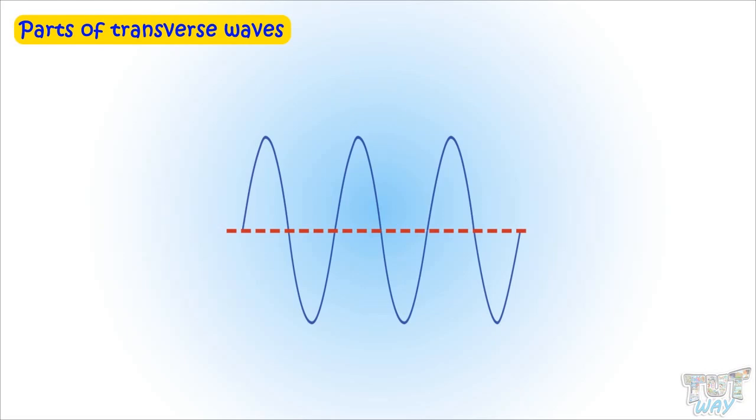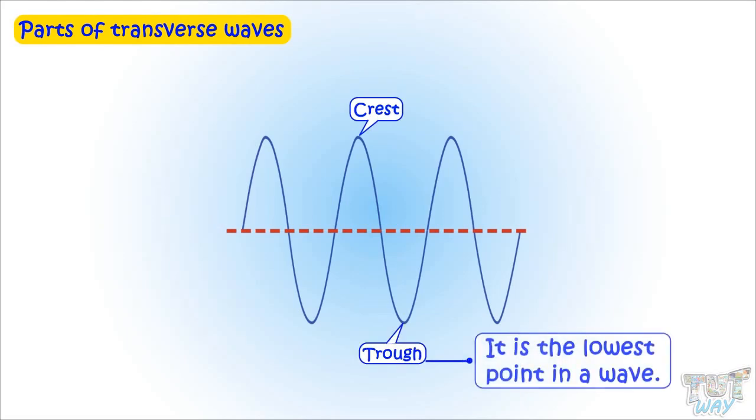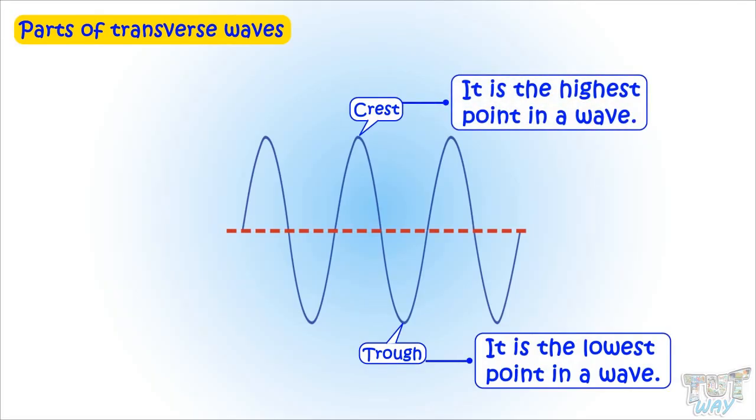Next parts of the wave are crests and troughs. Trough is the lowest point in a wave. Crest is the highest point in a wave. In this wave, we have three crests and three troughs.